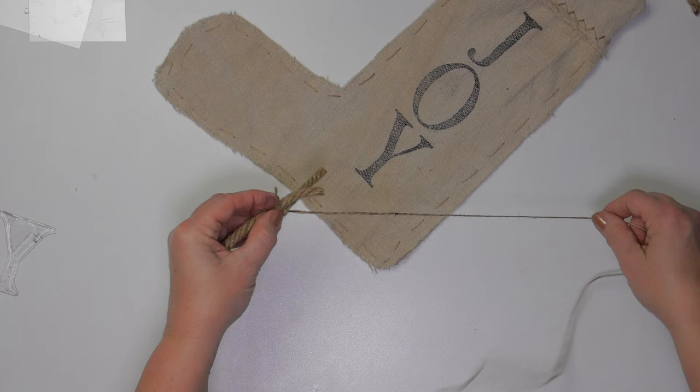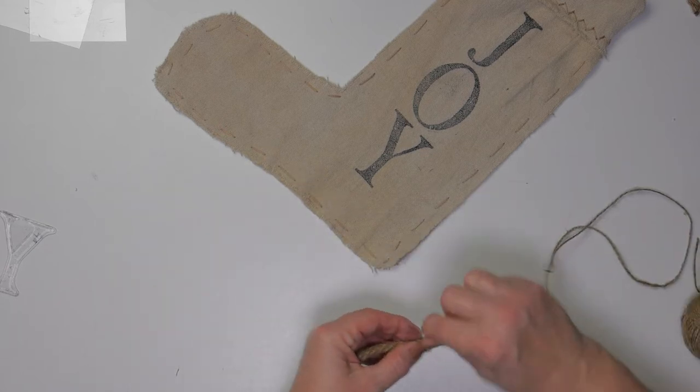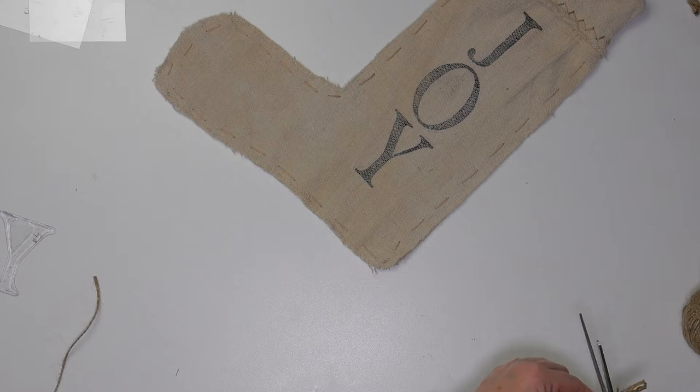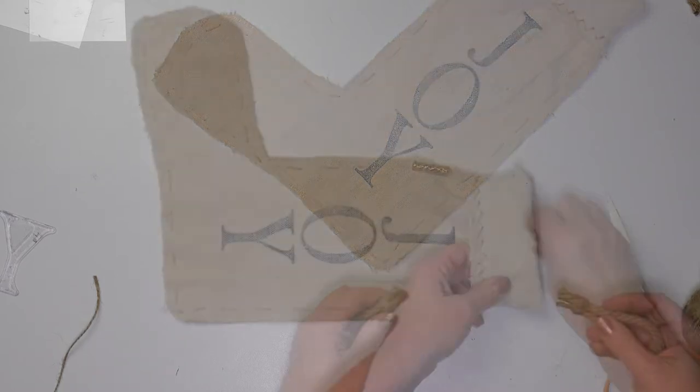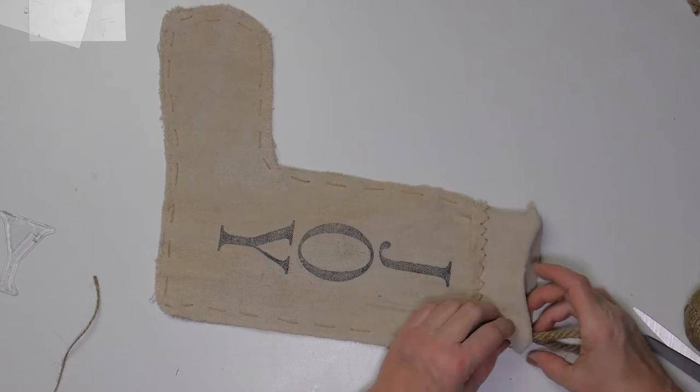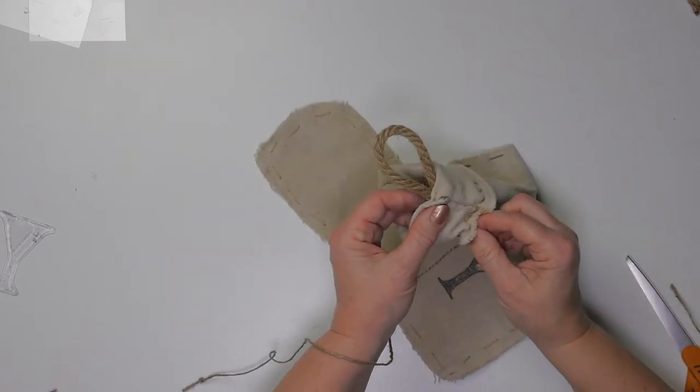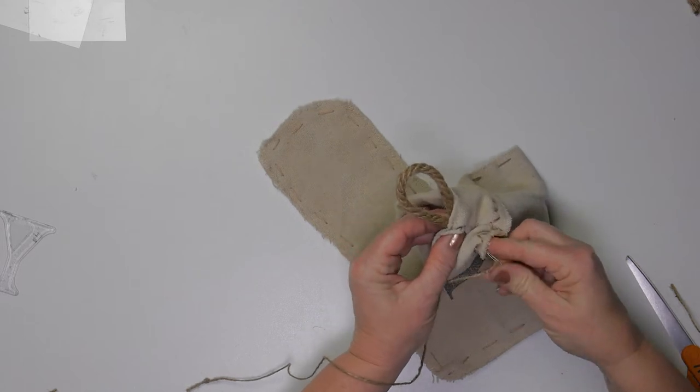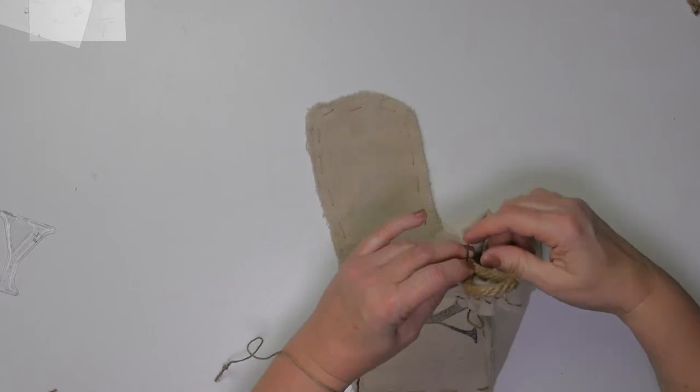I do use twine to sew this loop on so that it's nice and secure. So I just go in and out a few times underneath the little cuff here so you can't see the knot and secure it on tightly.